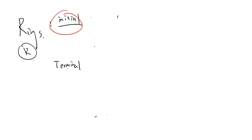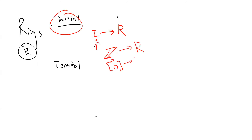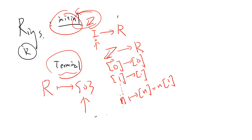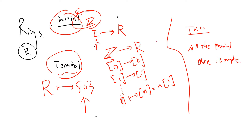In the category of commutative rings, the initial object is the integer ring ℤ — you always map zero to zero, one to one, and the rest are fixed by the homomorphism, so n maps to n·1 in the commutative ring. The terminal object is the zero ring — any ring can map to the zero ring. So ℤ is the initial object and the zero ring is the terminal object.